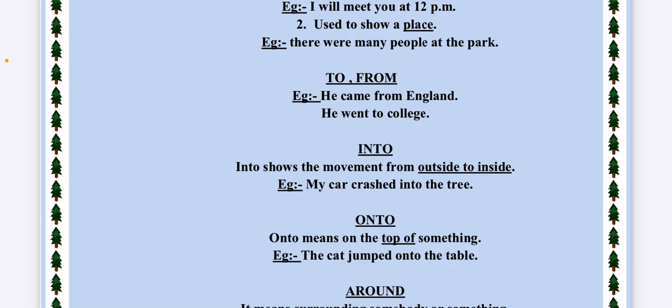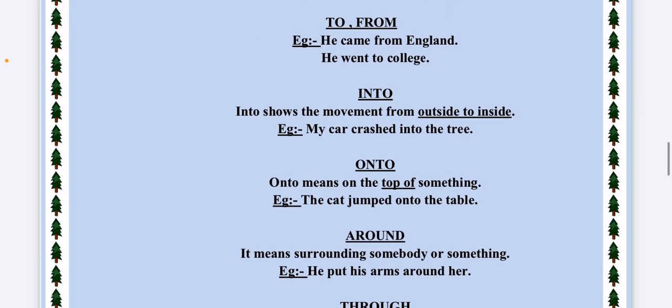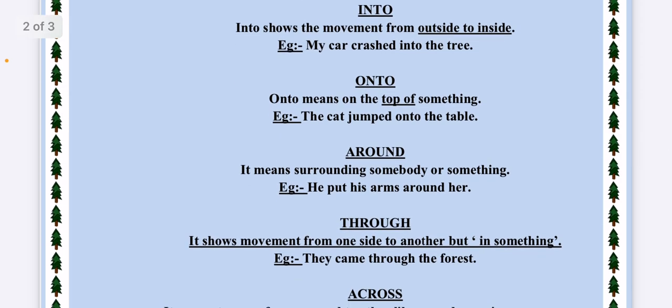Next is INTO and ONTO. Into means movement from out to in. Like my car crashed into the tree. Hemant dived into the pool, so he is coming from out to in. Next is ONTO. Onto means something which is in a position on the top of something. The cat jumped onto the table, means the cat is at a position on the table.